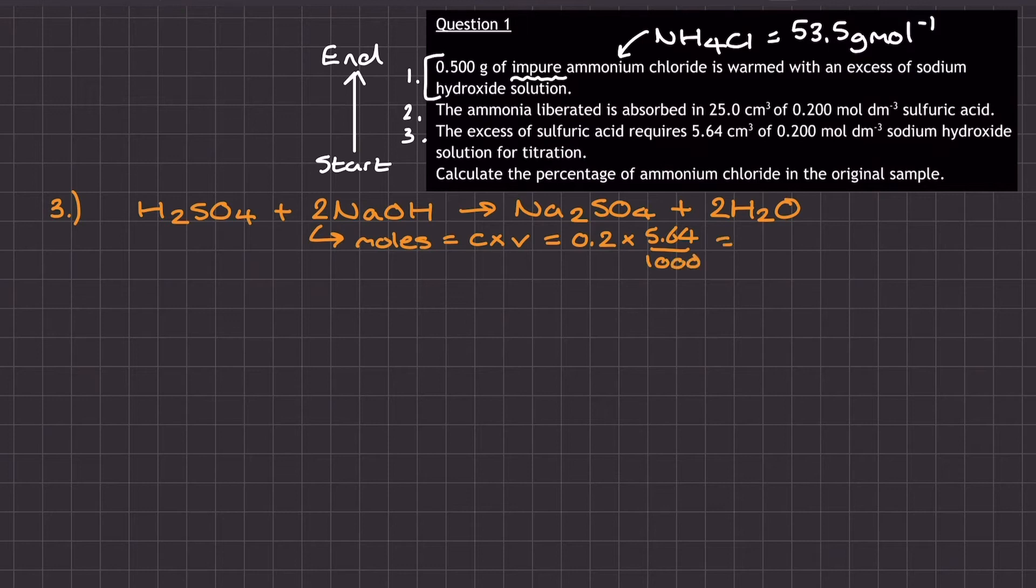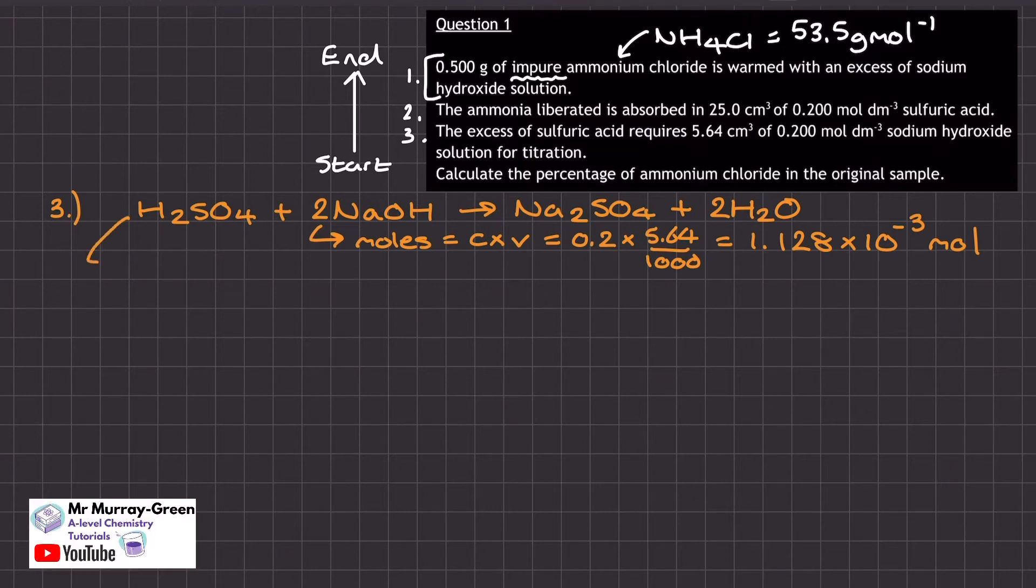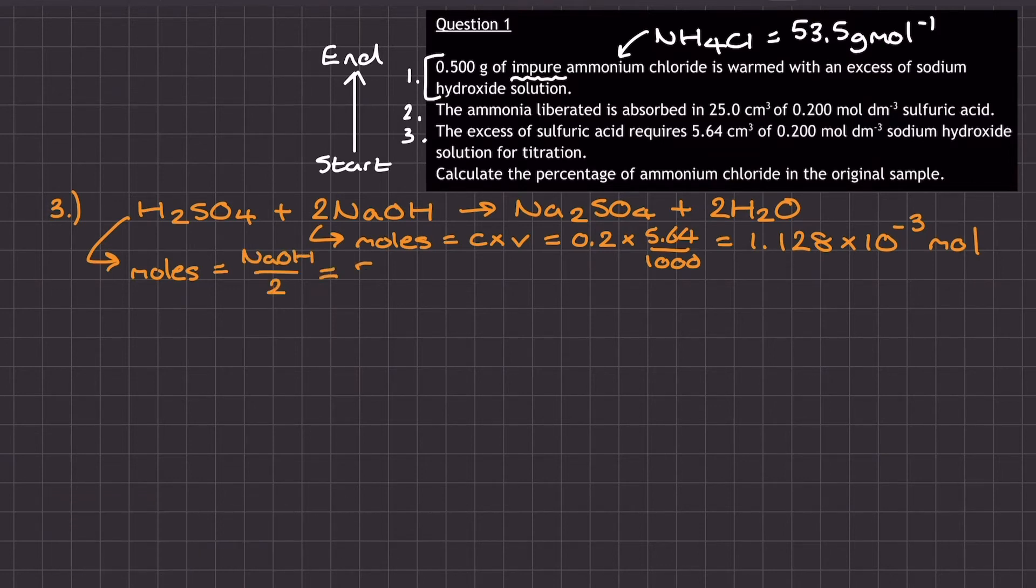So my number of moles of the sodium hydroxide is equal to 1.128 times 10 to the power of negative 3 mole. And then using the ratio in the equation between the sulfuric acid and the sodium hydroxide, I can divide the sodium hydroxide moles by 2. And that gives me the number of moles of the sulfuric acid that were in excess after stage 2, which is 5.64 times 10 to the power of minus 4 moles.